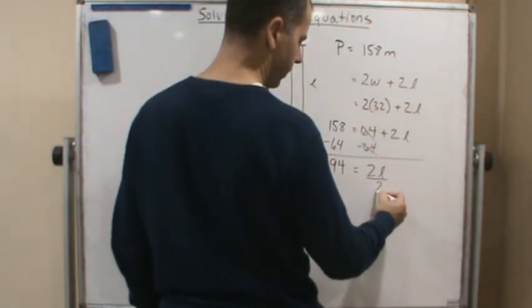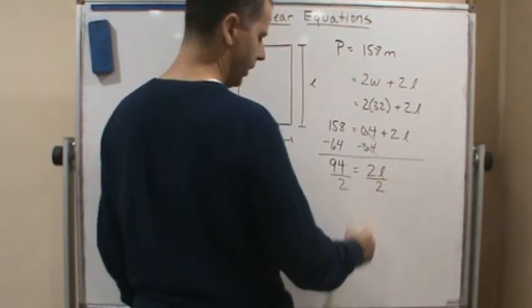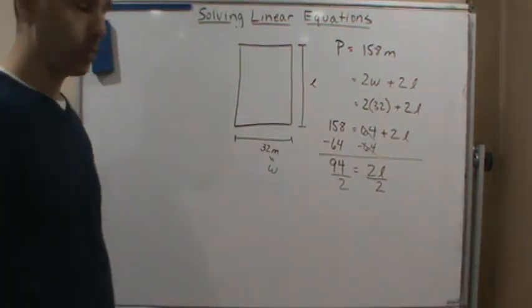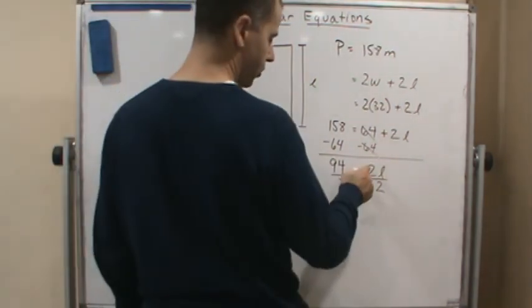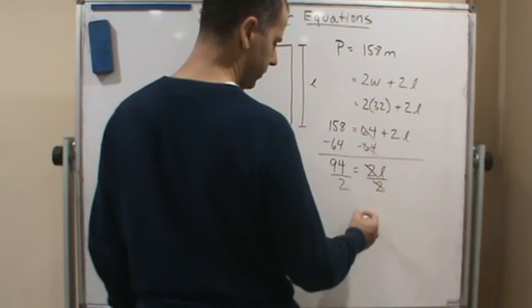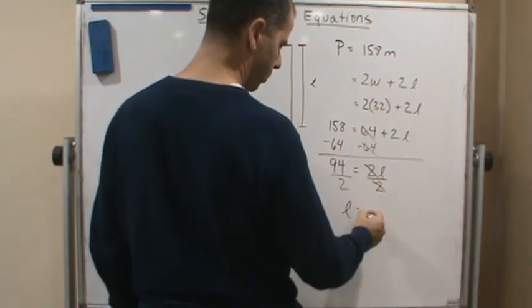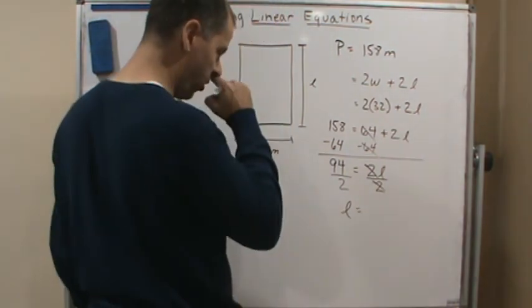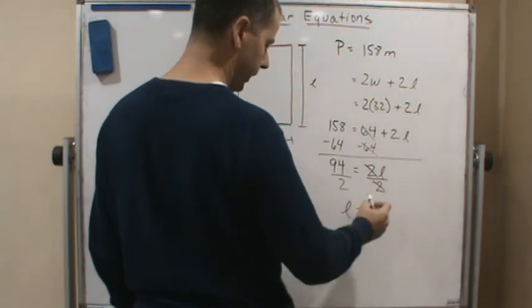Okay, so now what do we do? Well, we've got 2 times L going on, so we're going to divide both sides by 2. And so 2 divided by 2 gives us 1, so we get L equals, well, 94 divided by 2 is 47.